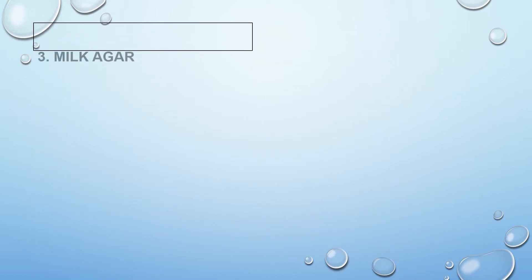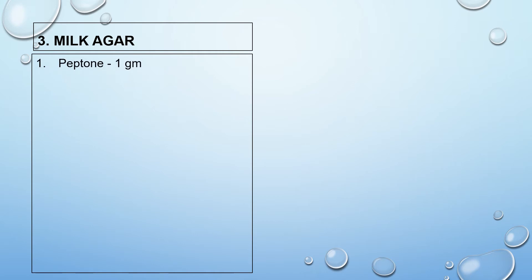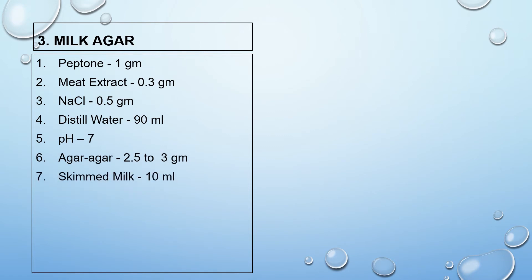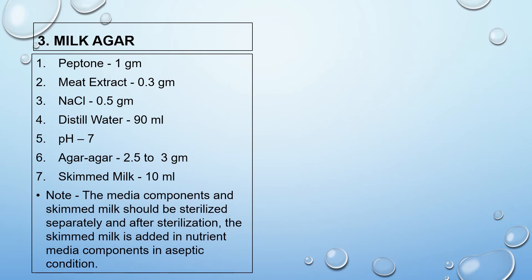The third media is milk agar. Composition: peptone 1 gram, meat extract 0.3 gram, NaCl 0.5 gram, distilled water 90 ml, pH 7, agar agar 2.5 to 3 grams, skimmed milk 10 ml. Important note: the media components and skim milk should be sterilized separately. After sterilization, the skim milk is added to the nutrient media components under aseptic conditions, and then the milk agar is prepared.